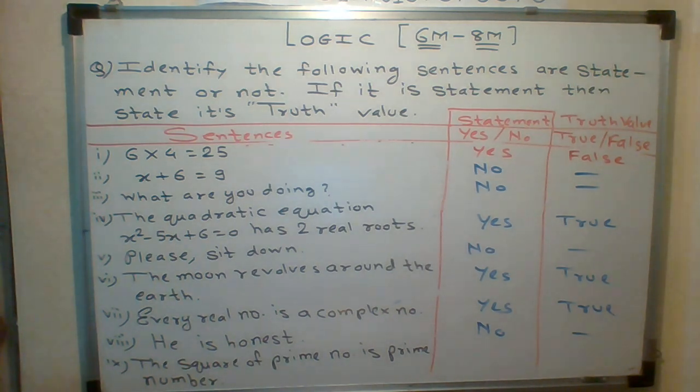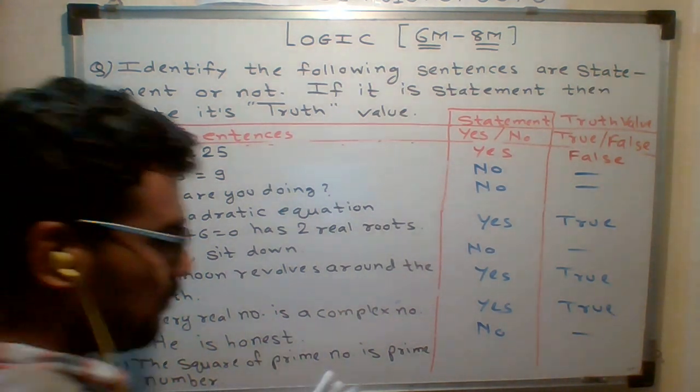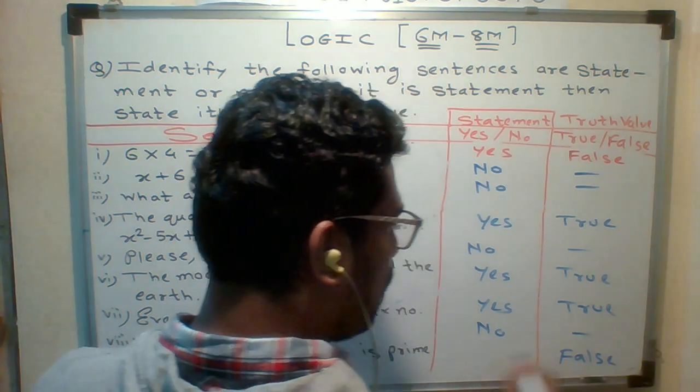The square of any prime number is not a prime number. So it is false. It is a statement. But it is a false statement.